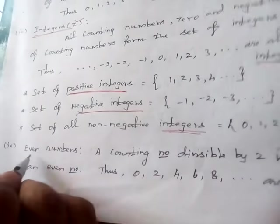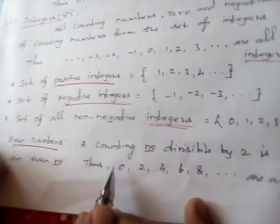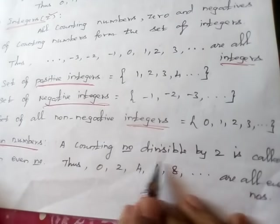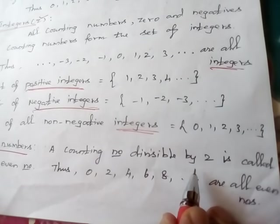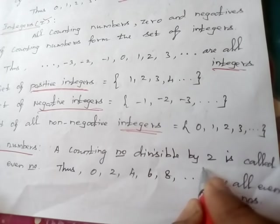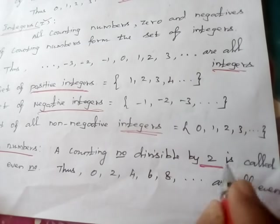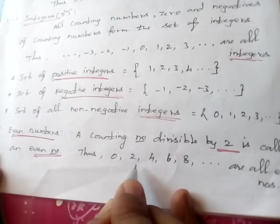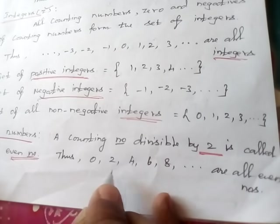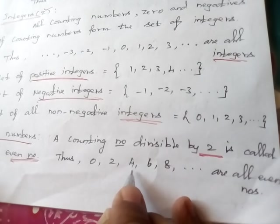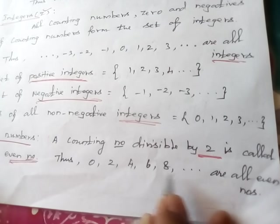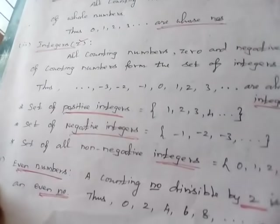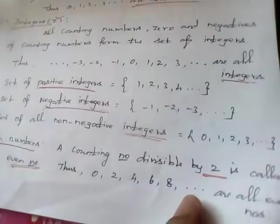Next, even numbers. A counting number divisible by 2 is called an even number. Thus, 0, 2, 4, 6, 8, etc. are the even numbers.